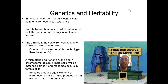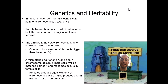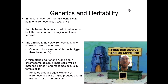In humans, each cell normally contains 23 pairs of chromosomes, for a total of 46. Twenty-two of these pairs, called autosomes, look the same in both biological males and females. The 23rd pair — the sex chromosomes — differ. One sex chromosome, X, is bigger than the Y. A mismatched pair of one X and one Y chromosome occurs in male cells, while a matched pair of two X chromosomes occurs in female cells. Females produce eggs with only X chromosomes, while males produce sperm with either an X or a Y chromosome.